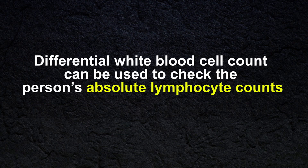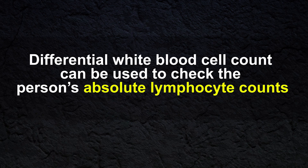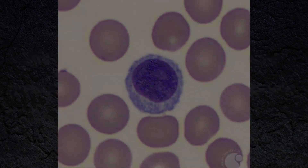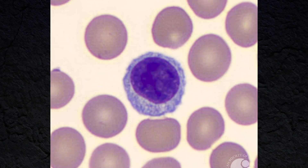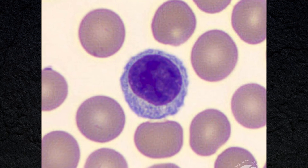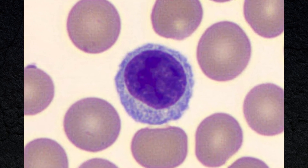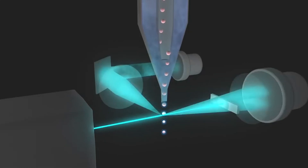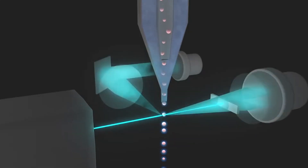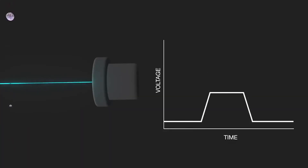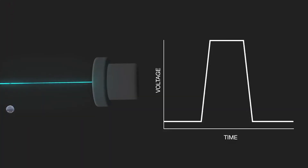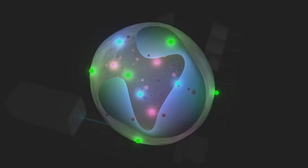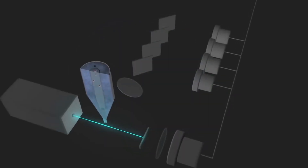A differential white blood cell count can be used to check a person's absolute lymphocyte count, and it is easy to identify lymphocytes in a sternal blood smear due to their size and shape. Flow cytometric analysis can also be used to identify different types of lymphocytes based on their antigen expression patterns.